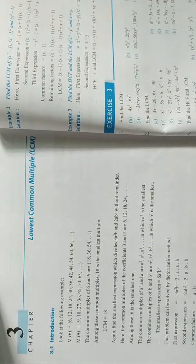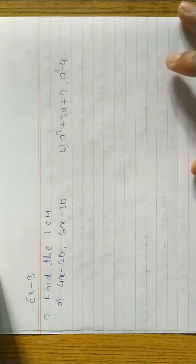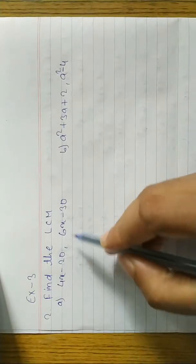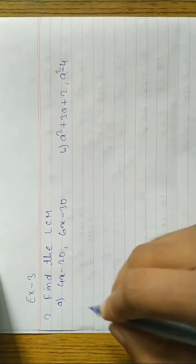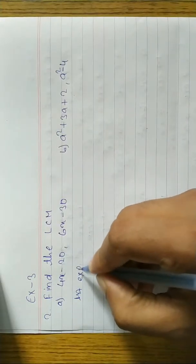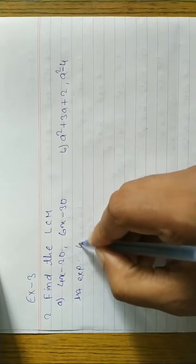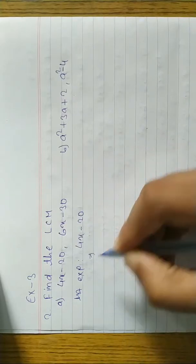Now we are going to do question number two and three. Let's start with question number two. You can see here we have question number 2a: 4x minus 20 and 6x minus 30. The first expression is 4x minus 20. First of all, we have to take common factors.